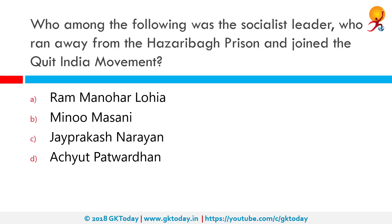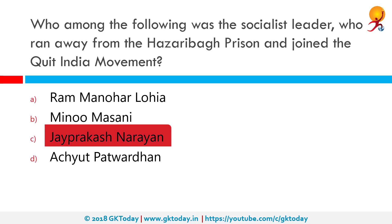Who among the following was the socialist leader who ran away from the Hazaribagh prison and joined the Quit India Movement? The Quit India Movement was launched by Mahatma Gandhi on August 9, 1942 and was the final assault of Indian nationalism on the citadel of British imperialism. More than 91,000 people were arrested and over a thousand lost their lives in police and military firing. Jai Prakash Narayan made a successful escape bid from Hazaribagh Central Jail in 1942. So the correct answer is Jai Prakash Narayan.